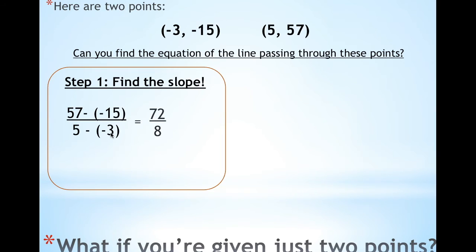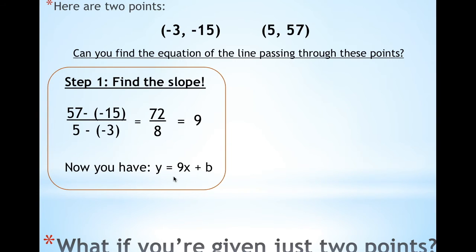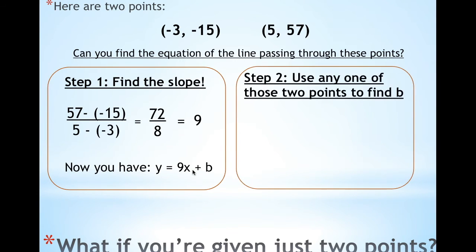Plug it into your rule, you get that your slope, or your a, is 9. So at this point you're at y = 9x + b. But now you need to find b. Use any of these two points — either this point or this point — to find b.